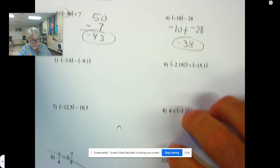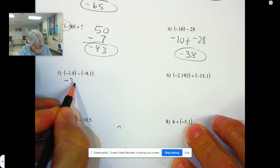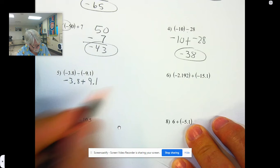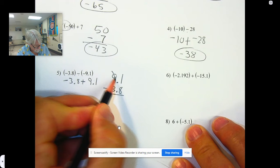So, I'm subtracting. Number five. So change it to adding the opposite. Negative 3.8 plus positive, negative 9.1. Now that it's adding, the signs are different.